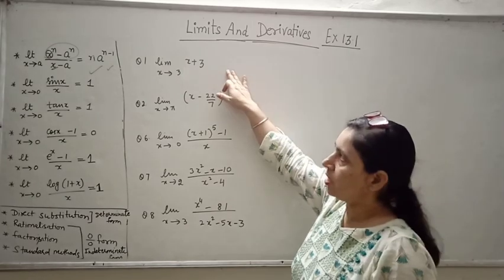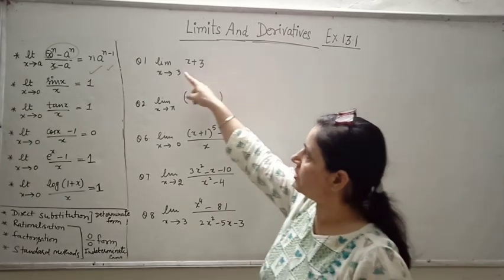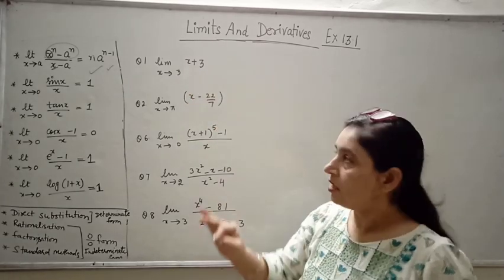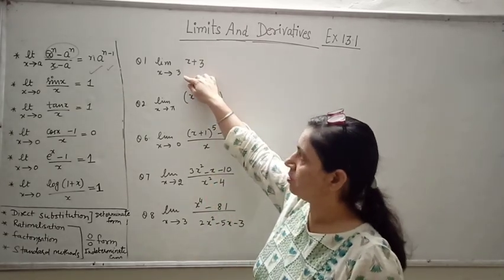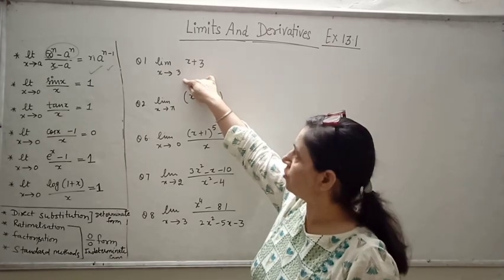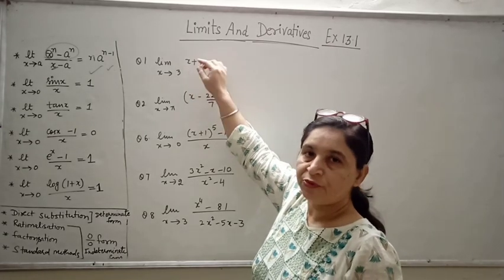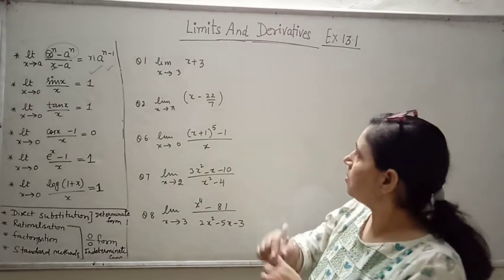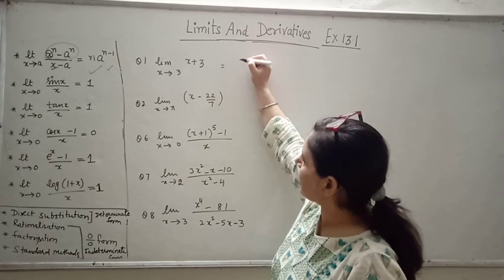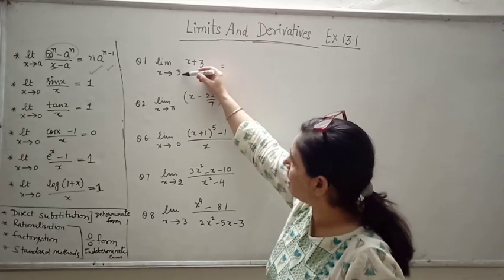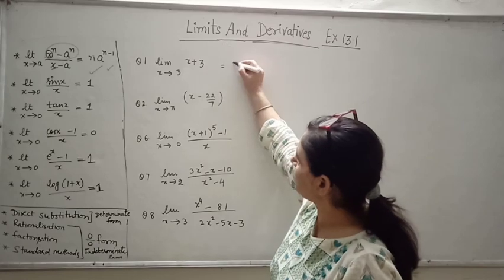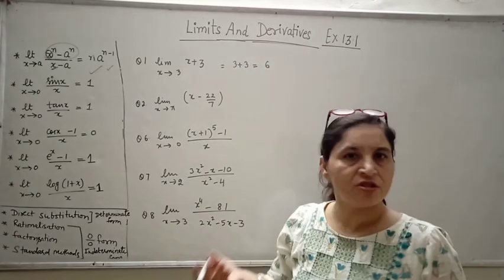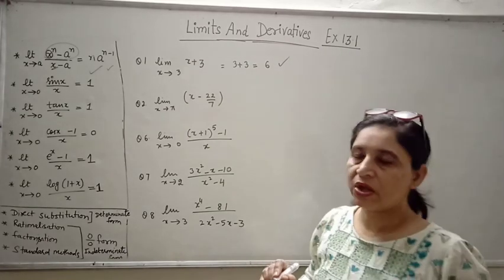Question number 1. It is given that limit x tending to 3 of x plus 3. As I told you, if we put the limit x tending to 3 and we do not get 0 by 0 form, then the answer will be whatever we get by direct substitution. If we put x equal to 3, we get 3 plus 3 is 6. This is not 0/0, so this is your answer.